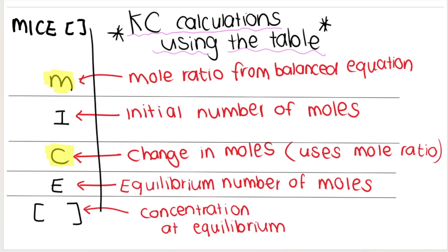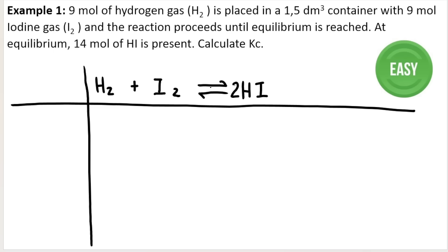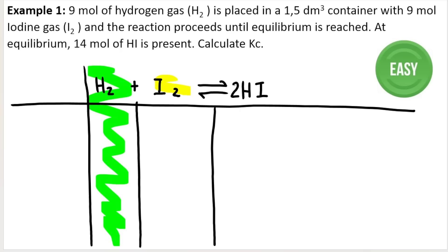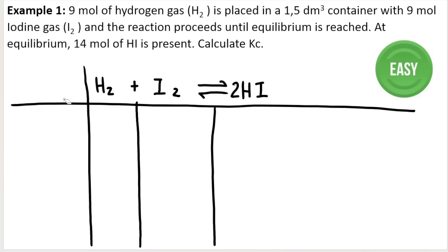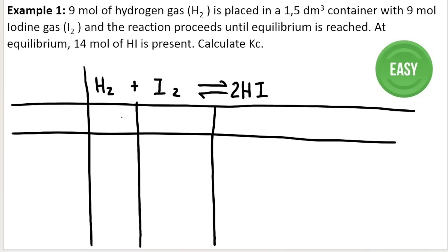In my table, the M stands for mole ratio from the balanced equation. I write my balanced chemical equation, and then give each substance its own column — all the values for H₂ go in one column, all the values for I₂ go in another, and all the values for HI go in a third. Then I draw in my rows. The mole ratio is the big numbers from the balanced equation — it's a one to one to two ratio. If there's no big number, it means it's a one.